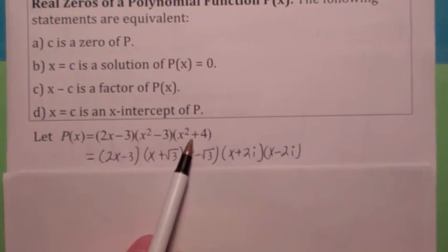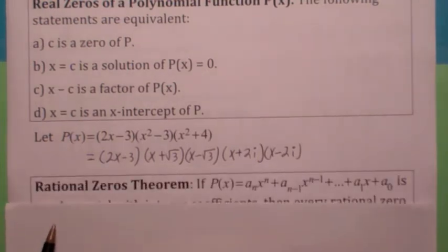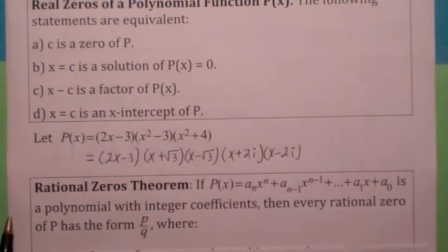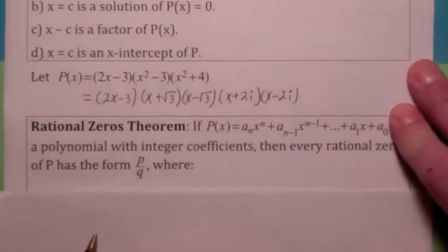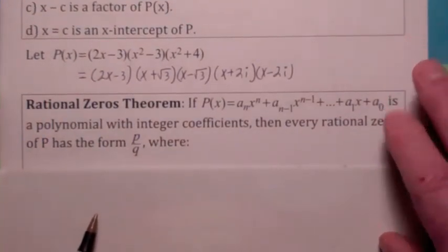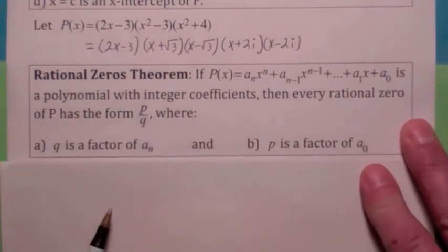When you factor this, this is a, we call this an irreducible quadratic. When you factor it though, you would get some non-real zeros. So there's different types of zeros here. In this section, we're going to talk about what's called the rational zeros theorem. It only helps you find the rational ones. It doesn't help you with the irrational or the non-real zeros. It's not hard to show why it works. We'll do it in class. We don't have time here.